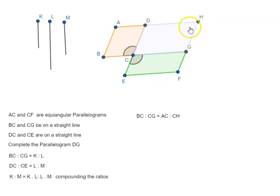So here AC and CH are under the same height, so they are proportional to their basis and here the basis are BC and CG. But we know BC is to CG is equal to K is to L.